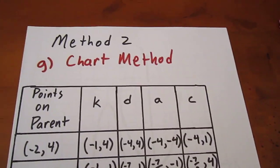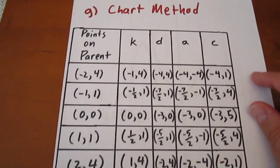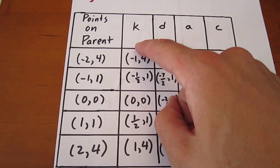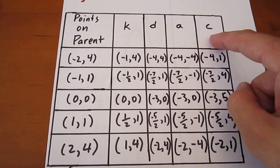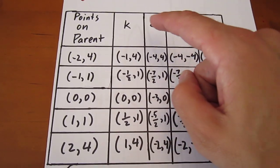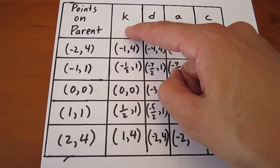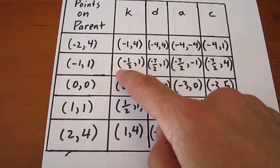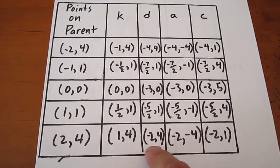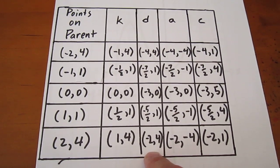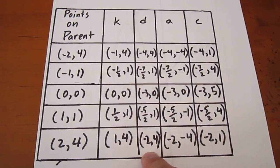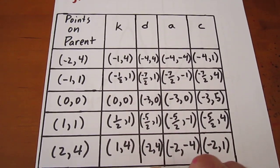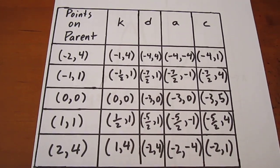Now, method number 2 is the chart method. And what we do here is we take points on the parent function, and then we figure algebraically the effect of every one of these four variable values. And so, in our case, since the k value was 2, we divide each x coordinate by 2, leave the y coordinates the same. We then deal with d, but remember, notice that we're never changing the value of the y coordinate in the k or the d column because k and d represent horizontal transformations, not vertical transformations.